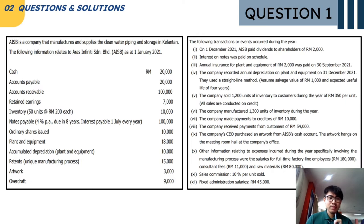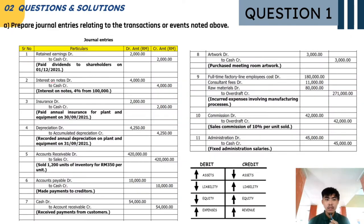This is question 1. AISB is a company that manufactures and supplies clean water piping and storage in Kelantan. The following information relates to AISB as at 1 January 2021, and the following transactions or events occurred during the year. The question asks us to prepare a general journal entry relating to the transactions or events noted.